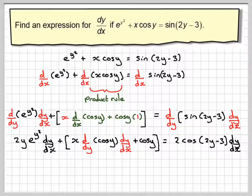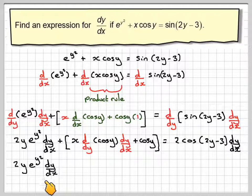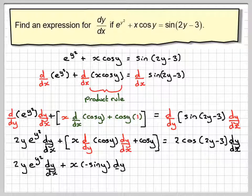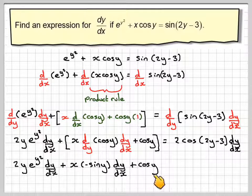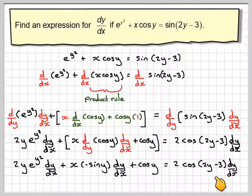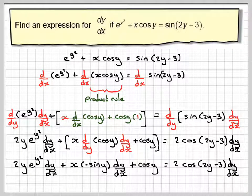So we've just got this little thing here to deal with next. So we're going to have 2y e to the y squared dy/dx plus x. The differential of cos is minus sine y. So we're now differentiating dy/dx plus cos y is equal to 2 cos of 2y minus 3 dy/dx.